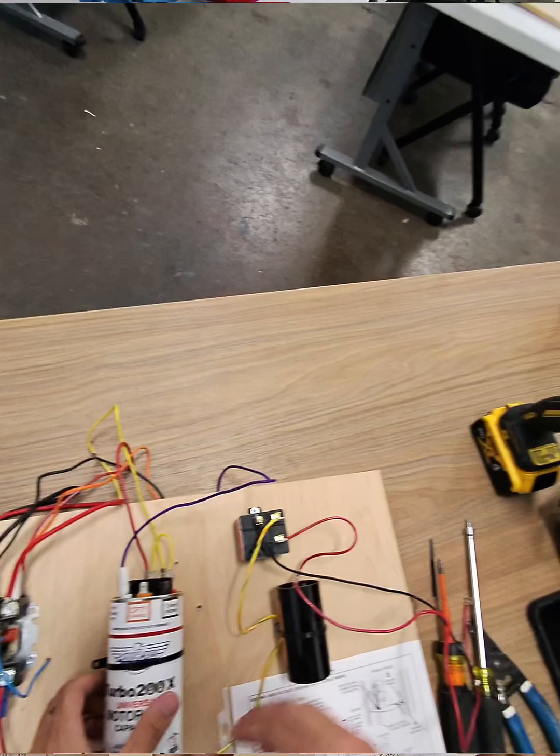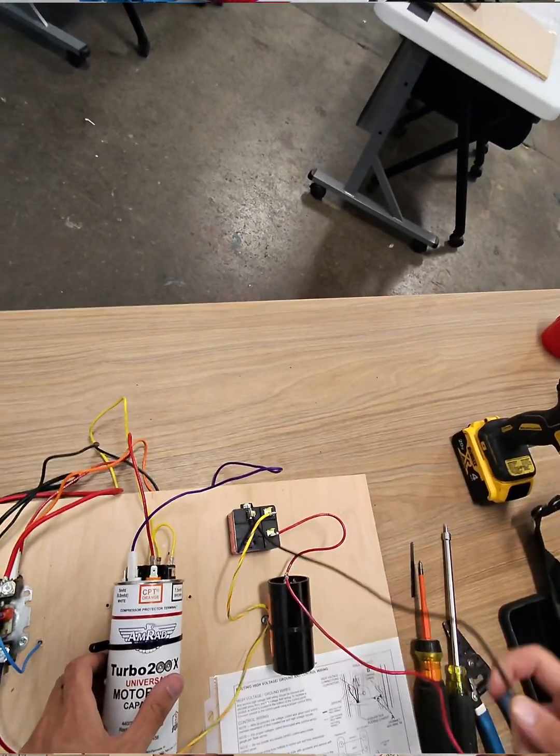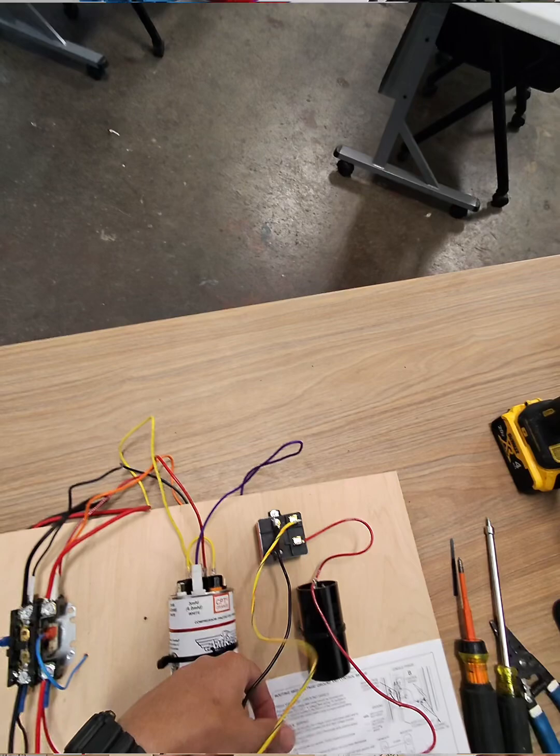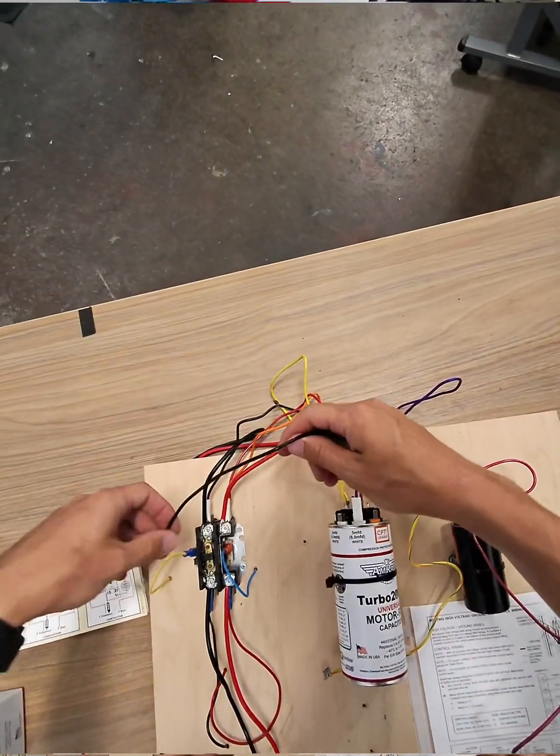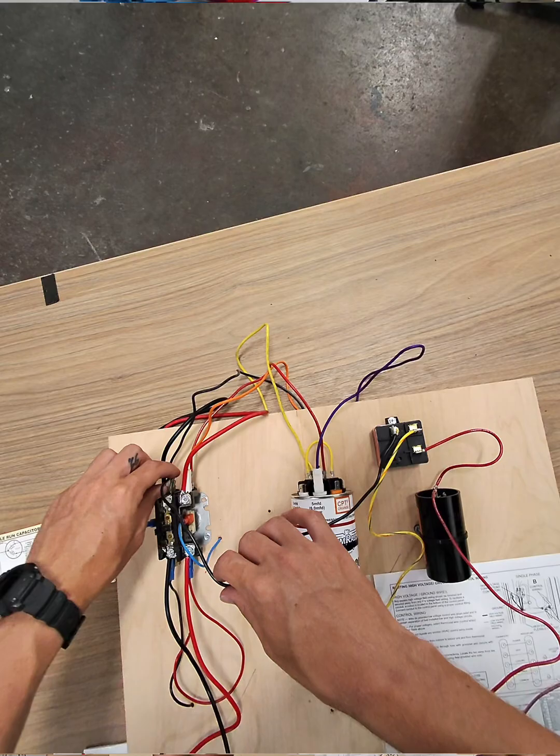So now for the hard start kit. Let's do this over again. So black wire, that one's not changing. That's going to your contactor.